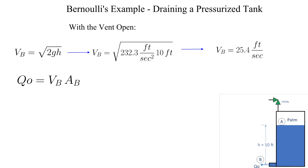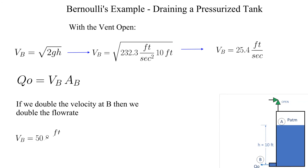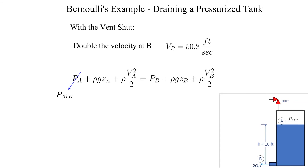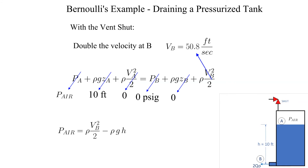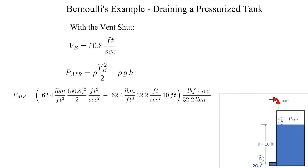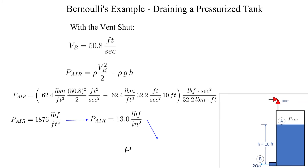We want to double the flow. The outlet area is constant, so we need to double the velocity. Once again, we set up Bernoulli's equation. This time the air pressure is not 0 psig — it is our unknown. Plugging in the known quantities and unit conversions, we obtain 13 psig. Note that this is gauge pressure, since we used 0 psig for the atmospheric pressure.